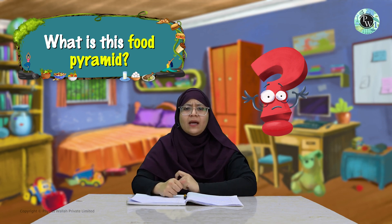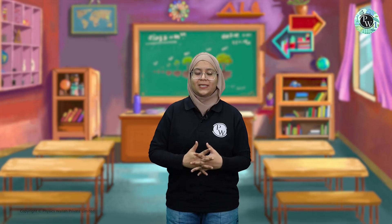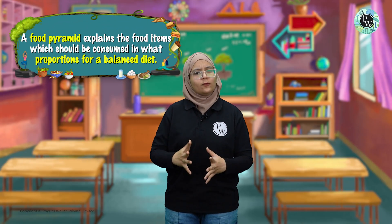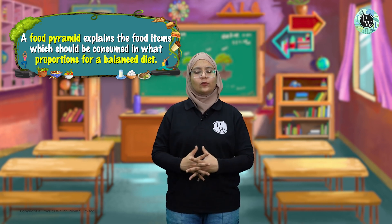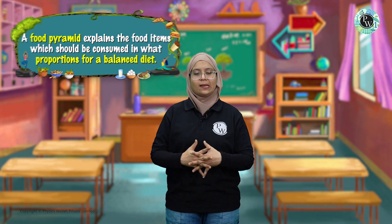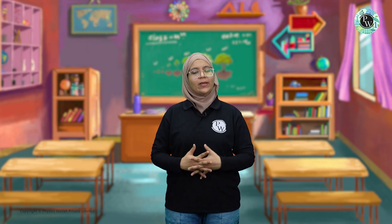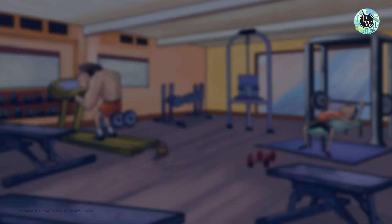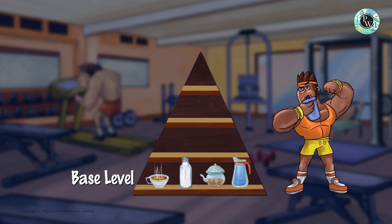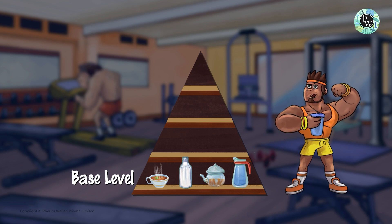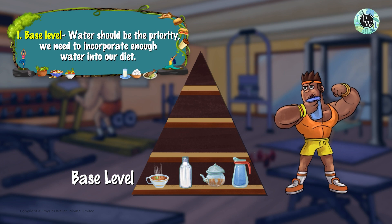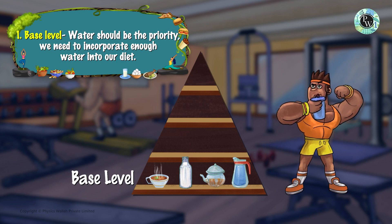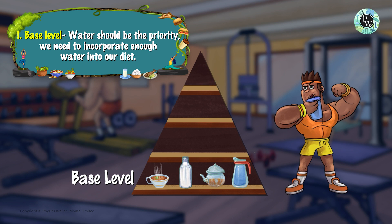Ma'am, yeh food pyramid kya hota hai? The food pyramid helps us know ke kis food ko hume kitne proportion mein khana hai. There are levels in the food pyramid. The base level contains water — water is most important and we should take it in a good quantity so that it can dissolve all the other nutrients which we eat.